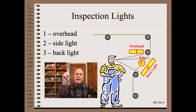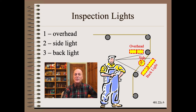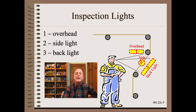The overhead light is most often the most useful for inspecting most defects, such as contamination, holes, or off-color. Just make sure that the reflection angle does not strike the operator's eyes, otherwise the visual image will be what photographers call blown out.